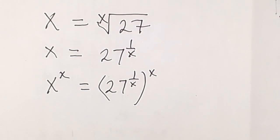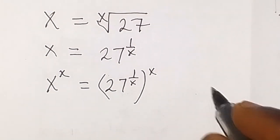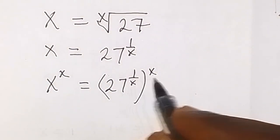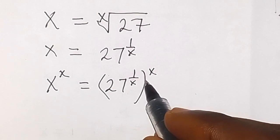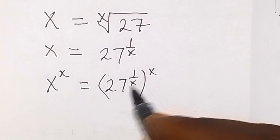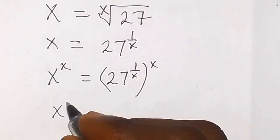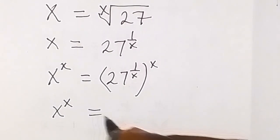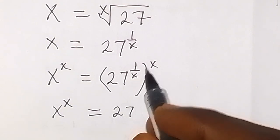And from there we know that this power multiplies each other, so therefore x here can cancel x here and we'll be left to 27 here. So that is x raised to power x equals to 27 left here because x has canceled.